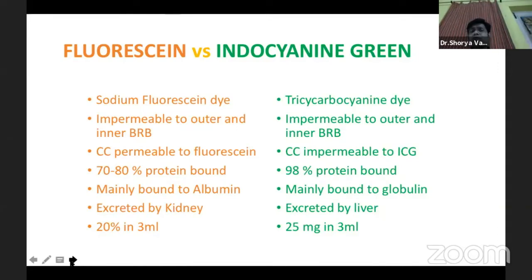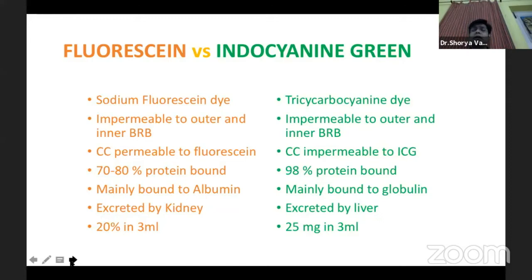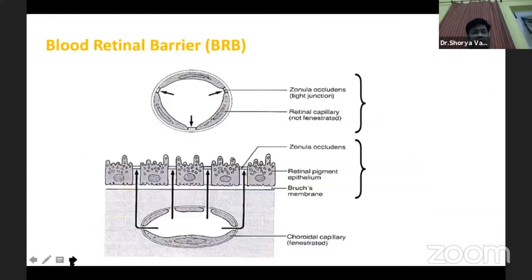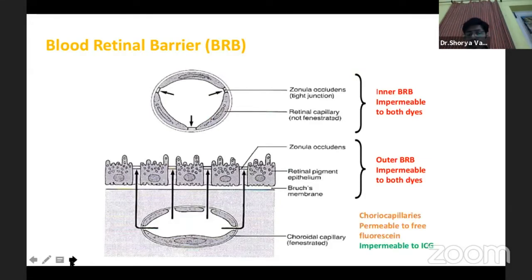Sodium fluorescein dye is smaller than the indocyanine dye, and both are impermeable to the outer and inner retinal barrier. However, fluorescein is 70 to 80 percent protein-bound, and that is why it has the capability of extravasating from the choriocapillaries through its fenestrations. Whereas indocyanine green is 98 percent protein-bound, and because it is a bigger molecule, it does not permeate well through the choriocapillaries and stays largely intravascular, which helps us in studying the choroidal vasculature. ICG is also impermeable to the fenestrated choriocapillary.